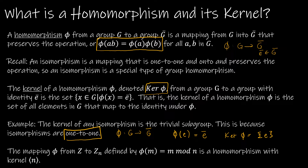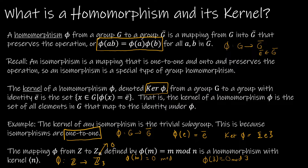Let's look at an example. Let's say phi maps Z, the set of integers, to Z3, the integers mod 3. The identity in Z3 is 0. So essentially, we're asking: phi of what values gives us 0 mod 3? Well, phi(3) gives us 0 mod 3, phi(6) gives us 0 mod 3, and so on. So really, any multiples of 3 — and that's why we say the kernel is everything generated by 3.